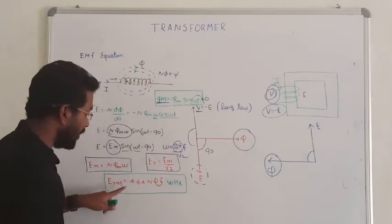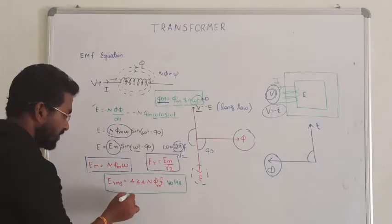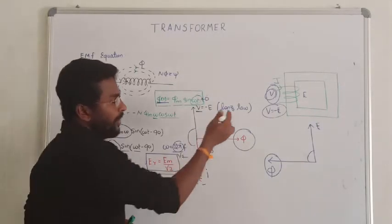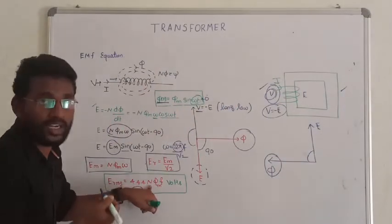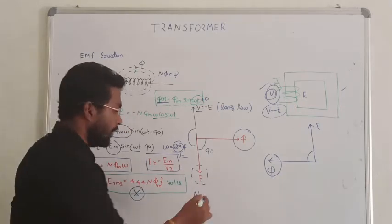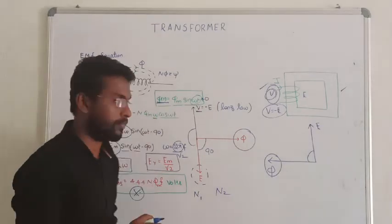Divide you will get RMS voltage. That is, 2π by root 2 will give you 4.44 times of number of turns, φ EMF times of voltage. So this is the RMS voltage that is being generally induced in the primary and the secondary side of the transformer. So where yes, N denotes the number of turns. Primary side of N will become N1. Secondary side of N will become N2. Rest of things are remain same. Same formula on our secondary equilibrium.